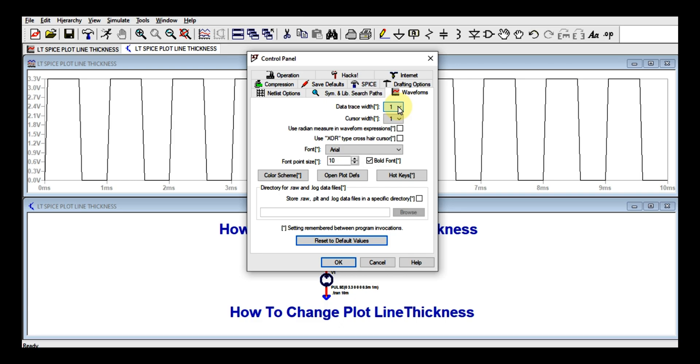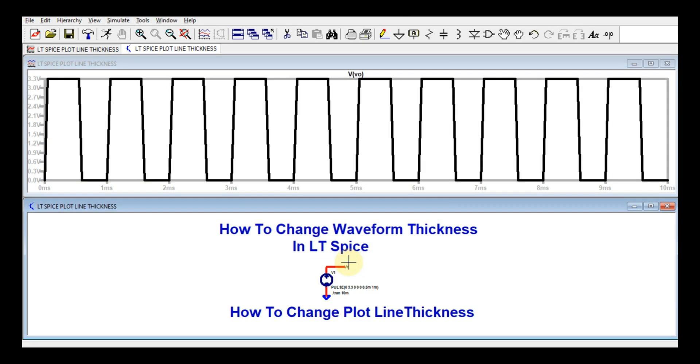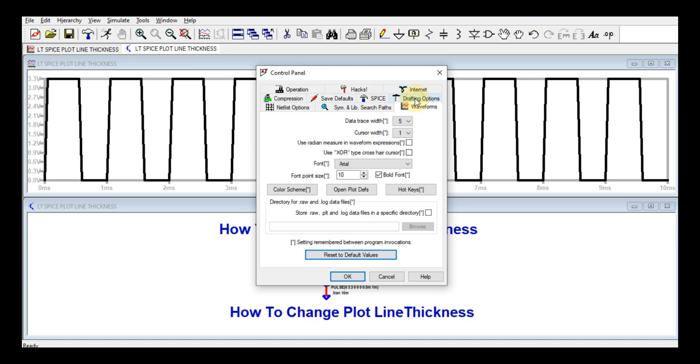Let me first do like five, click OK, and you can see now the thickness. If you want to increase the thickness further, control click on Waveform, and let me select this for seven. Click on OK.